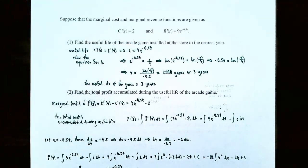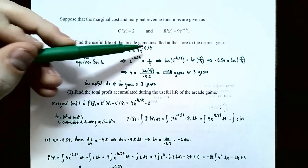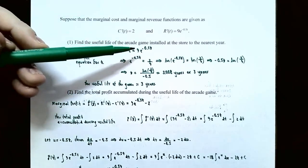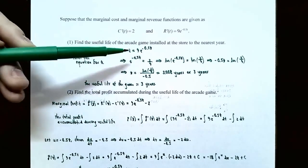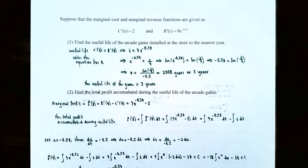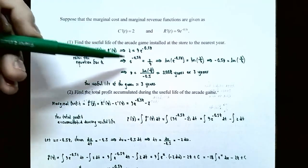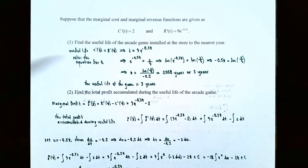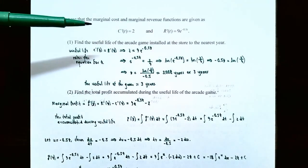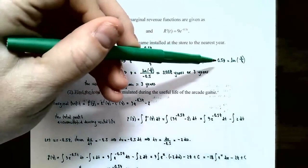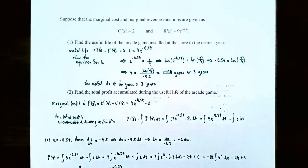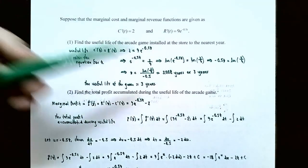Divide both sides by negative 0.5 to solve for t. So t equals the natural log of two-ninths divided by negative 0.5, which gives approximately 3.008 years. Rounded to the nearest year, the arcade game has a useful life of about three years.